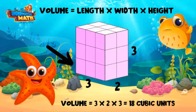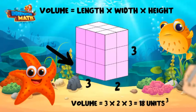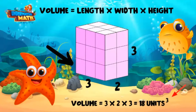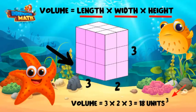Oh wow, I'm learning so much today! That's right — sometimes we show cubic units by putting a little three called an exponent next to the unit. I always remember volume uses a three because we are multiplying three dimensions together: length, width, and height. That makes so much sense!